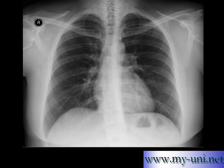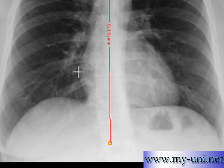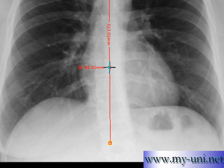Draw a vertical line right from the start of the thoracic cavity down to the level of the diaphragm. One third of the cardiac shadow lies on the right hand side and two thirds of the cardiac shadow lies on the left hand side of the patient. Find out the maximum extension of the cardiac border on the right hand side and make a measurement from this extension to the vertical line you just drew.